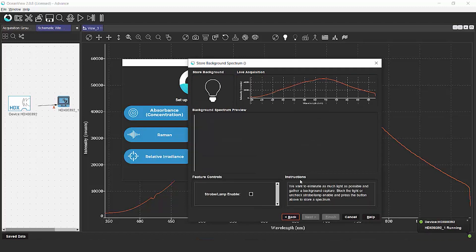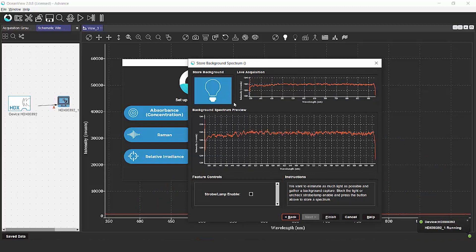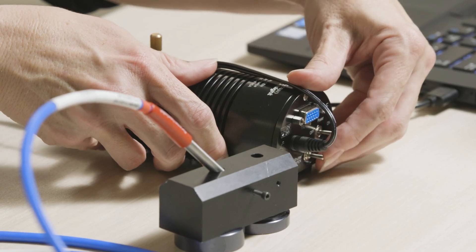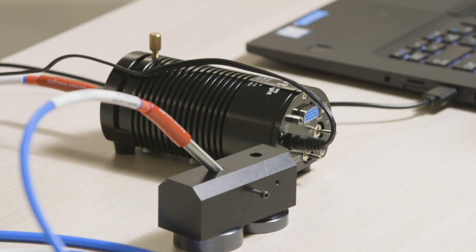We're going to close our shutter again so we can take a dark measurement. We're going to click the light bulb, and we're going to finish the wizard.